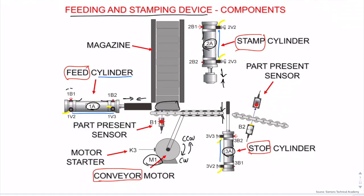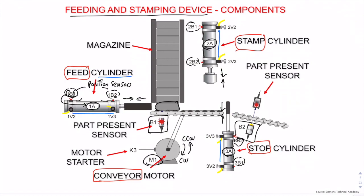These two are position sensors. They sense the position of cylinder 1A when it is fully extended or fully retracted, labeled as 1B1 and 1B2. The letter B is for sensors and the number on the right is the sensor number. The number on the left is the actuator number. There are a total of six position sensors — a pair on each cylinder. These two are field sensors. They sense the presence of the workpiece or object, labeled as B1 or B2. Now let us look at the machine sequence to verify that each actuator will do a work motion on the workpiece.